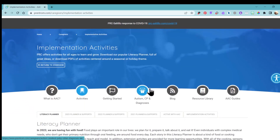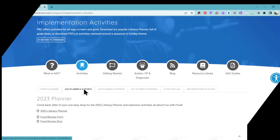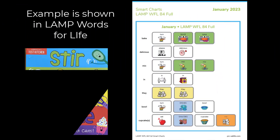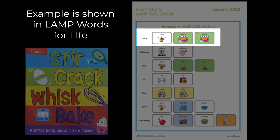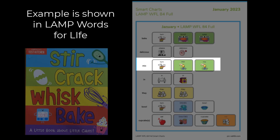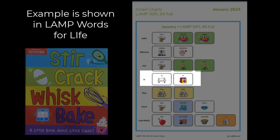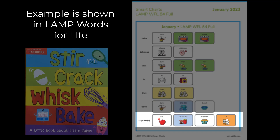From here, you'll see the tab that says 2023 Planner Supports. Our target words this month are Bake, Delicious, Mix, In, They, Bowl, and Cupcakes.